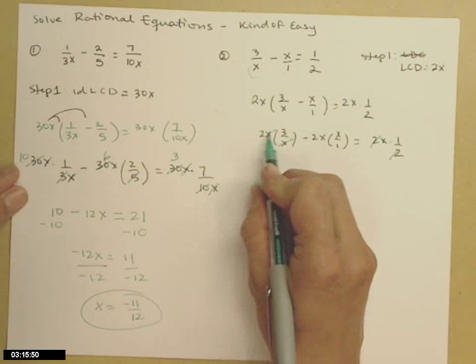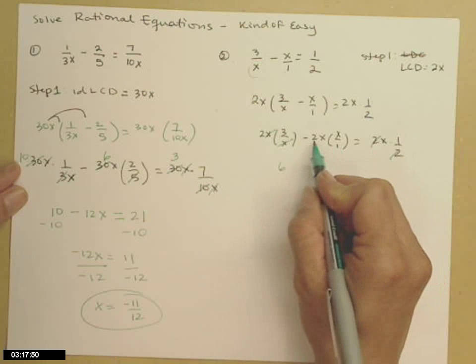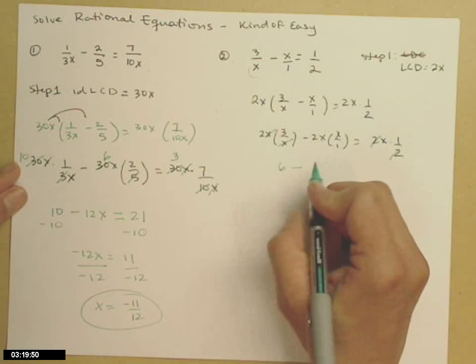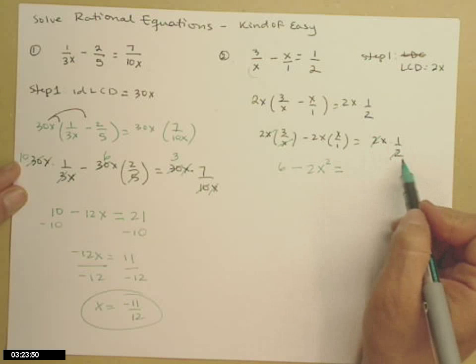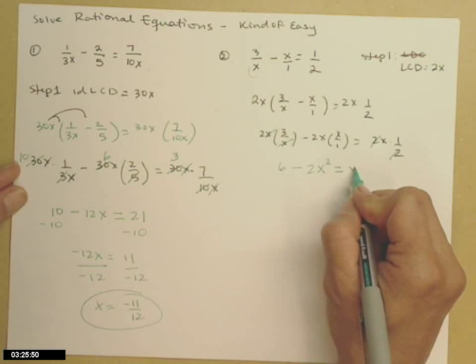Gathering up what's left, 2 times 3 is 6. Minus 2 times x times x, that's a minus 2x squared. Equals, over on the other side, everything cancels but that x times a 1.